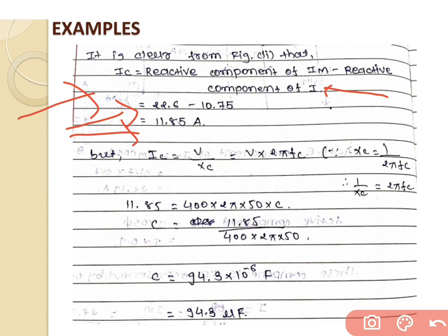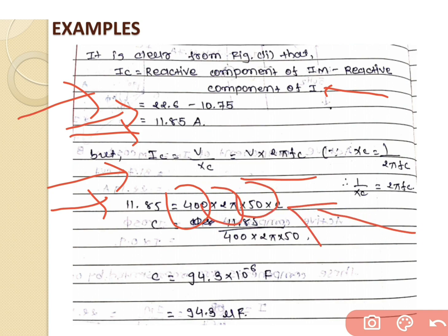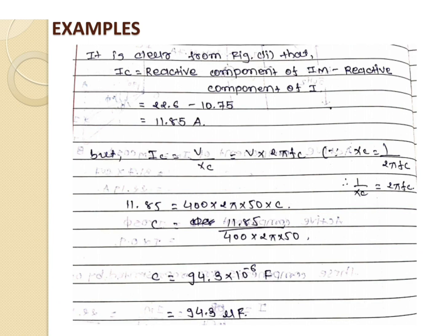Using IC = V/Xc = V × 2πfC: 11.85 = 400 × 2π × 50 × C. Solving, C = 94.3 × 10⁻⁶ F = 94.3 μF. This is the value of capacitance to be connected across the motor to improve the power factor from 0.7 to 0.9 lagging.